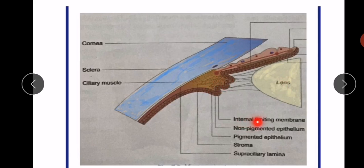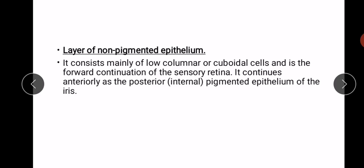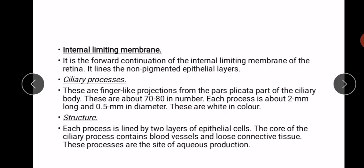In the diagram, the lens is shown here, along with the internal limiting membrane. Non-pigmented epithelium is present at the internal limiting membrane, followed by pigmented epithelium. In the stroma, ciliary muscle, connective tissue, and fibroblasts are present. Then we have the supraciliary lamina. The layer of non-pigmented epithelium consists mainly of low columnar or cuboidal cells and is the forward continuation of the sensory retina. The internal limiting membrane is the forward continuation of the internal limiting membrane of the retina, and it lines the non-pigmented epithelium layer.